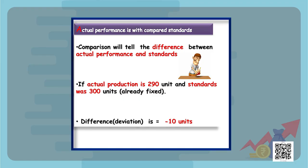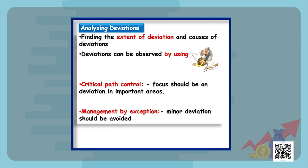Then we move on to comparison of actual performance with the standard set. Under this step we compare the performance according to the standards that have been set. The performance might be more than the standards or less than the standards, and the difference is known as deviation.